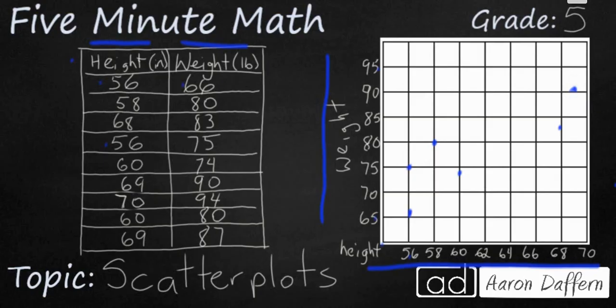Then we have 70 and 94. So 70 is on the very end and that is a little bit higher. It is going to be on the very front line. We have 60 and 80. And you notice these are not in order. They are not necessarily in any kind of pattern. They are scattered all over the place. Then we have 69 and 87. That is going to end up right there kind of in the middle. So those are all of the points on this scatter plot. Now what does that mean?